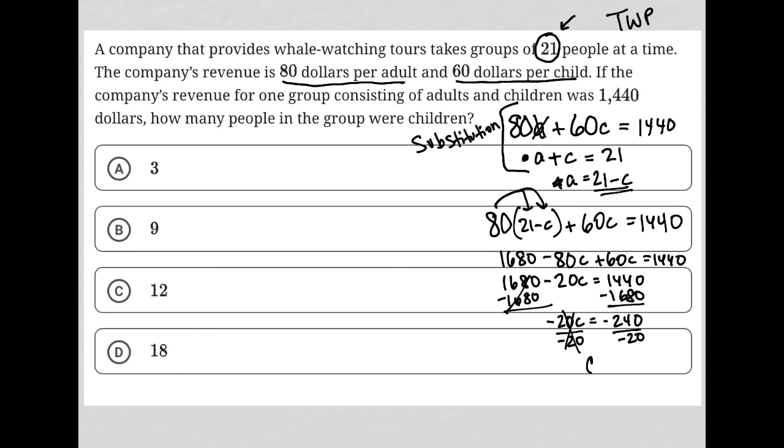I'm left with C is equal to negative divided by negative is positive. 240 divided by 20 is 12. So there is my correct answer, which is choice C.